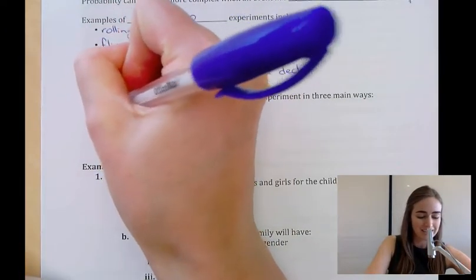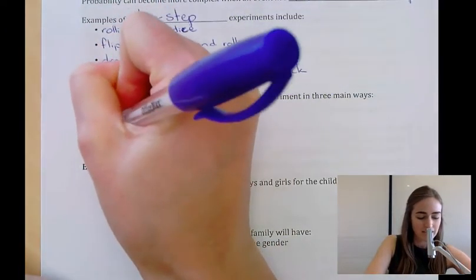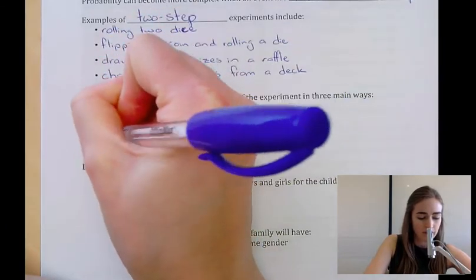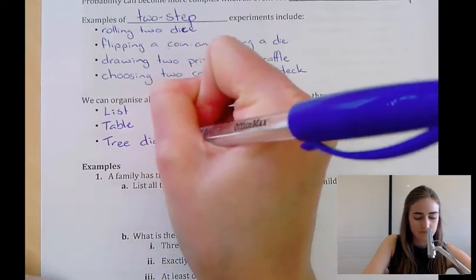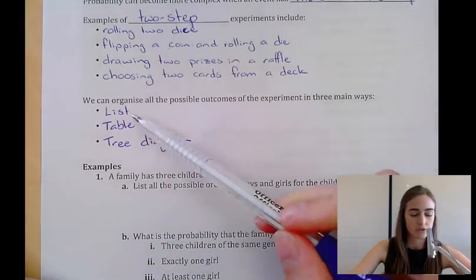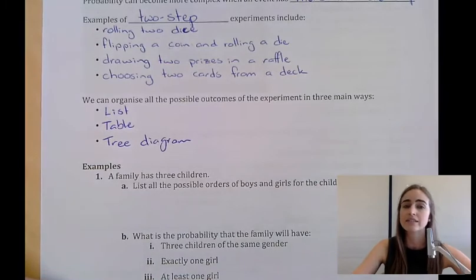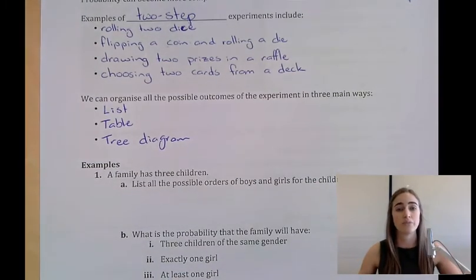There's three main ways we can do that. We can write them in a list, write them in a table, or write them in a tree diagram. In this video, we're just going to look at lists and tables, and in our next lesson, we'll look at tree diagrams.